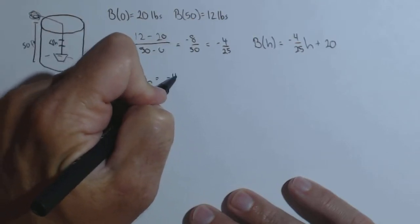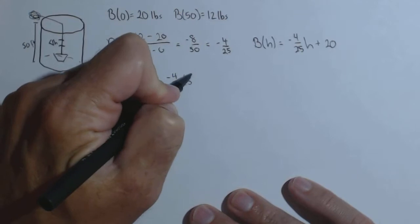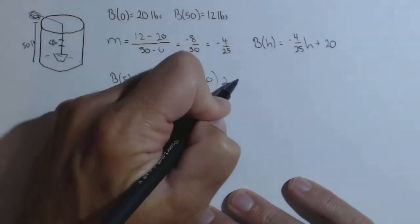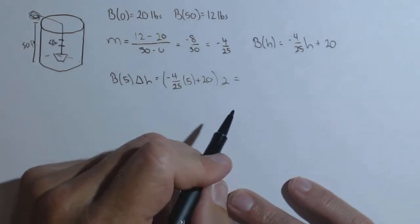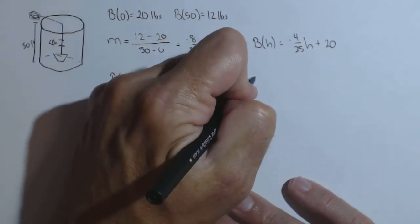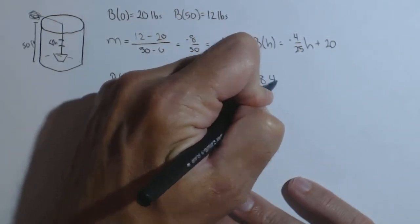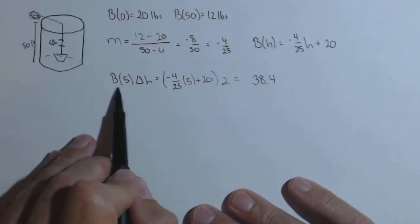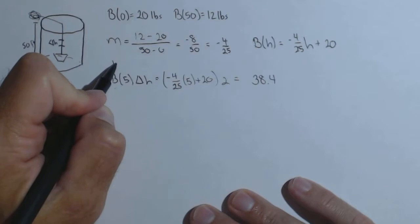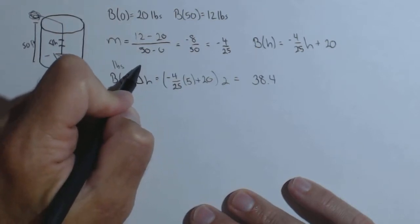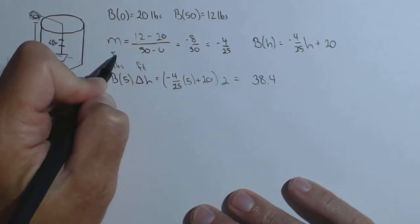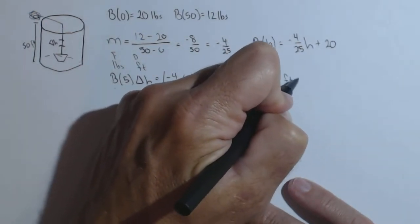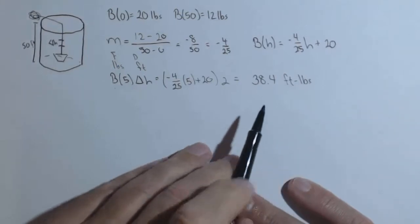Well, B(5) is going to be negative 4/25ths times 5 plus 20, and let's let delta h equal 2. We'll move it up just 2 feet. Calculating this as 38.4. Now let's think about what the units are. We did a force in pounds here times the distance in feet. So a force times the distance, so this gives us 38.4 foot-pounds of work.